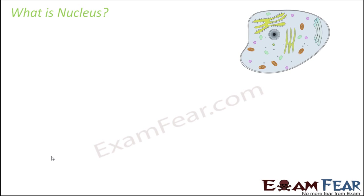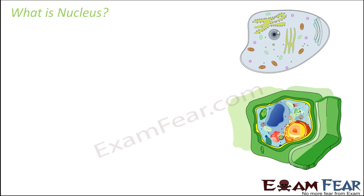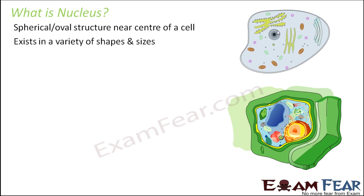So what is nucleus? Inside this cell, if you look somewhere around the center, you find a prominent spherical or oval rounded structure which is nothing but the nucleus. It is also known as the brain of the cell or the control center of the cell because it controls all the active properties which take place inside a cell. It is present in both plant as well as animal cells. It was first described by Robert Brown around 1831.